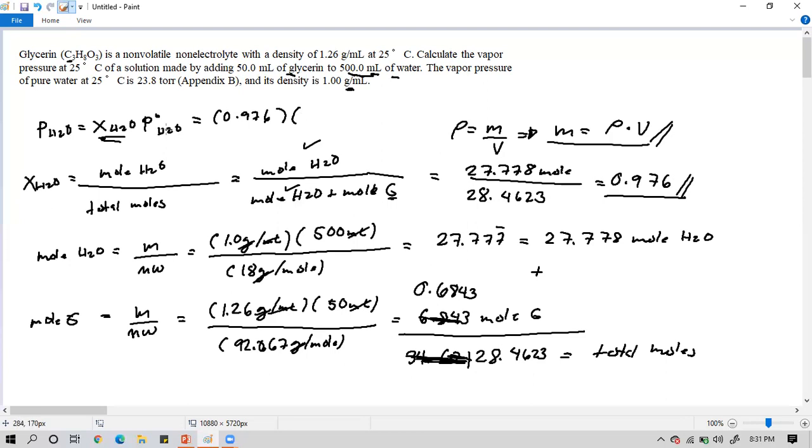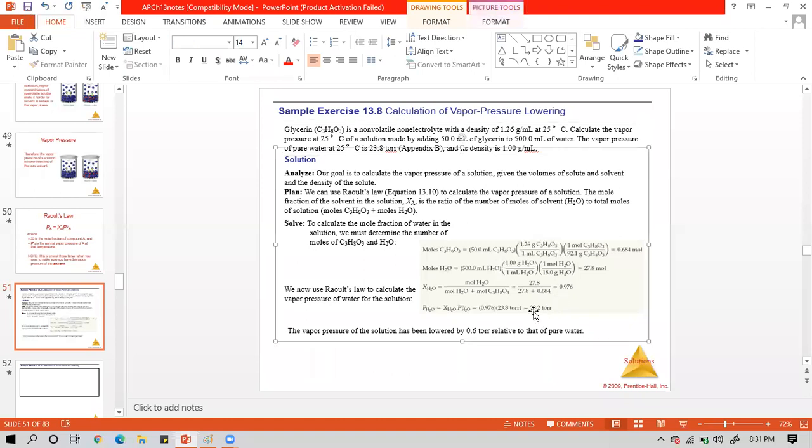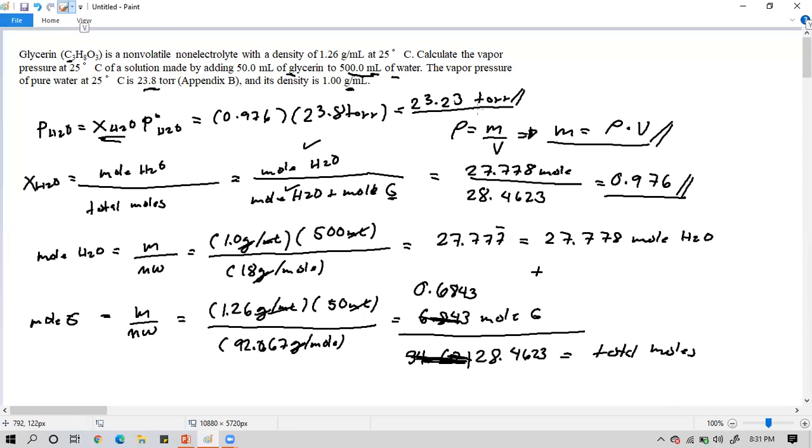For the vapor pressure lowering, the vapor pressure constant of water is 23.8 torr. That's standard. If you notice, it's direct substitution, but the difficult part is calculating the mole fraction. Our answer for this part is 23.8 times 0.976, that would be 23.23 torr. So that's our answer. Let's check. The answer is 23.2, so our answer is 23.23. Take a screenshot.